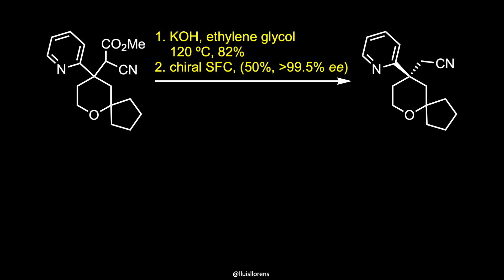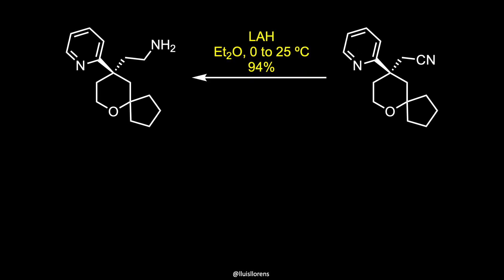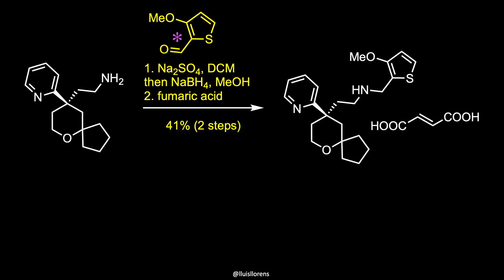Decarboxylation was achieved under strong basic conditions with heating to afford the nitrile, which was subsequently separated by SFC chiral separation. Reduction of the nitrile to its primary amine was accomplished with lithium aluminum hydride in ether. Reductive amination with the commercial aldehyde and fumarate salt formation provided olyceridin fumarate in 41% yield over two steps.